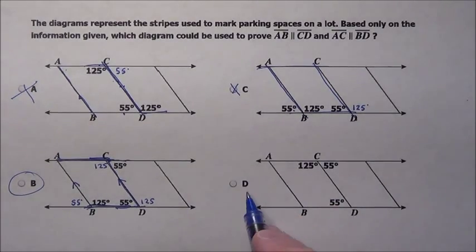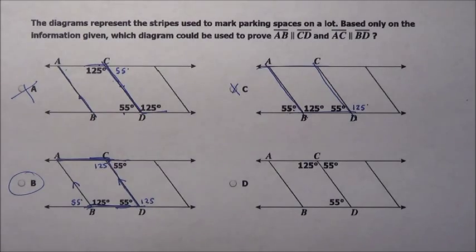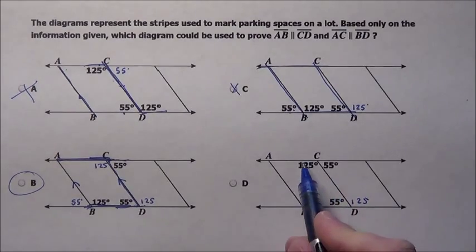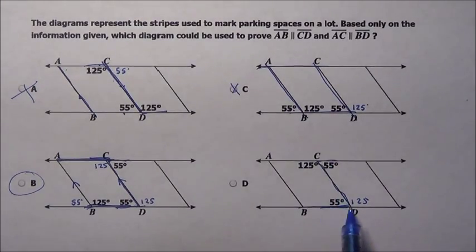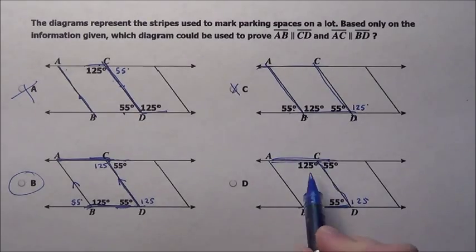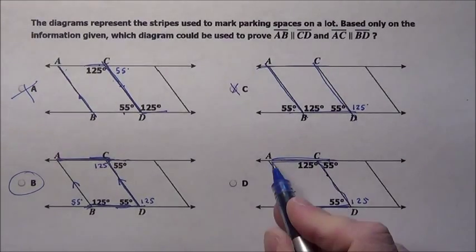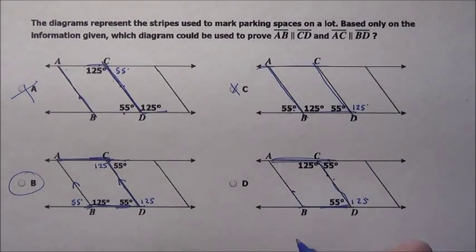Now, let's double check that we don't have anything over here on D because sometimes they want you to mark all of them that prove it. This is 55, we've got 125 here. I can prove, again, we have a Z-Meister here, so I know this BD is parallel with that. But is there any relationship between this CD and this AB? There isn't anything. I can't prove anything.